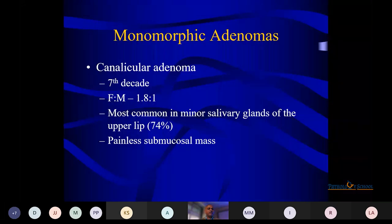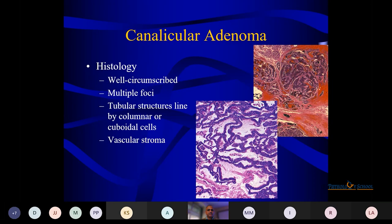Another component is the canalicular adenoma — uncommon, but among the commonest sites in the minor salivary glands. Seen in the 7th decade, more common in females. Canalicular adenoma has a bead-like pattern with multiple foci, tubular sex cords lined by fibrillar columnar cells and loose vascular stroma.